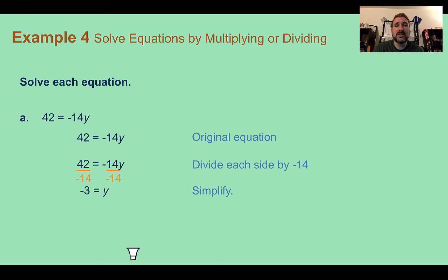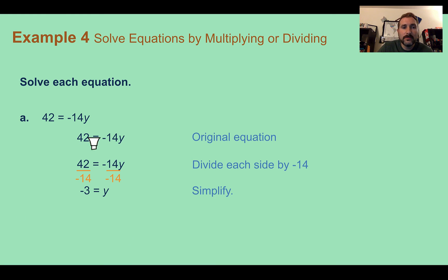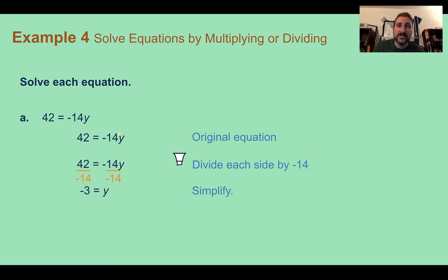For whole numbers or decimals, we just use the division property directly. Using the vertical method, starting with 42 equals negative 14y — since this shows multiplication of negative 14 times y, we do the opposite and divide both sides by negative 14. We end up with y equals negative 3.